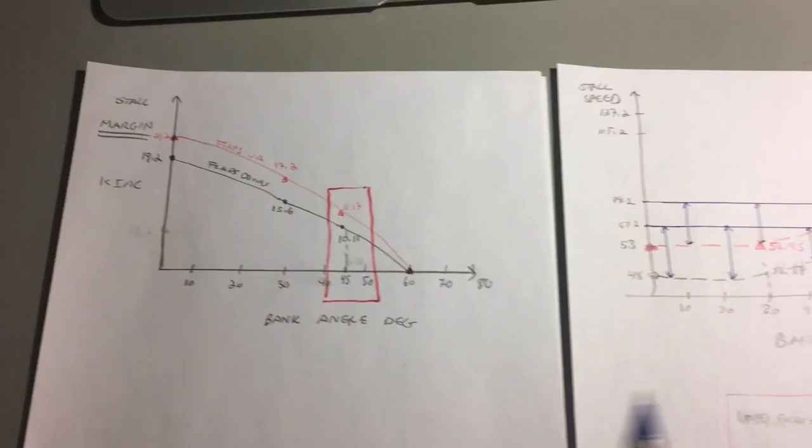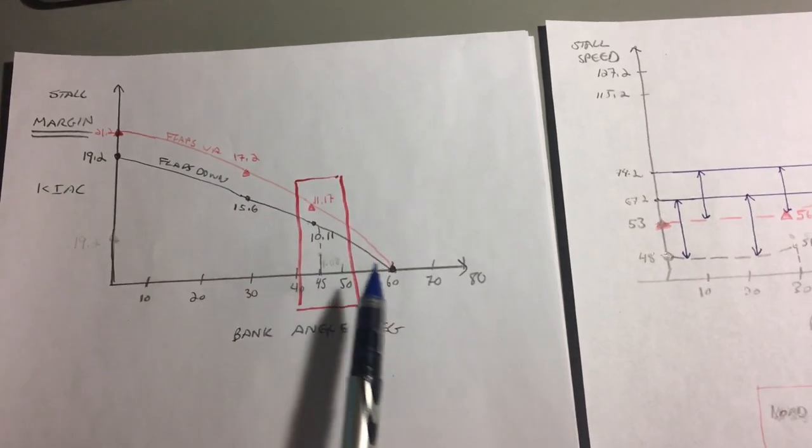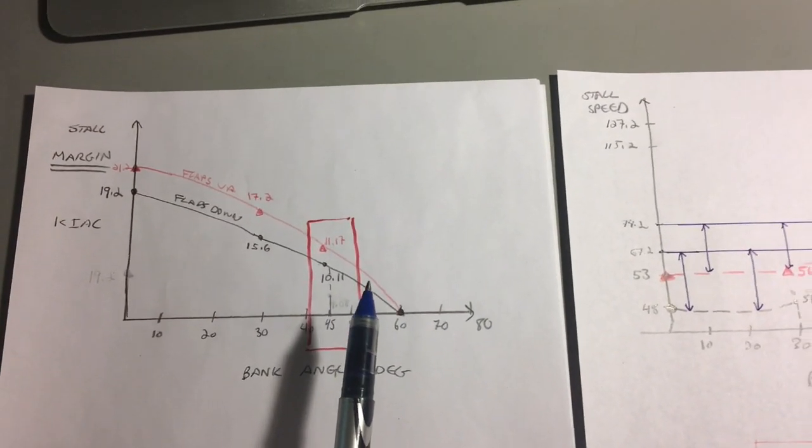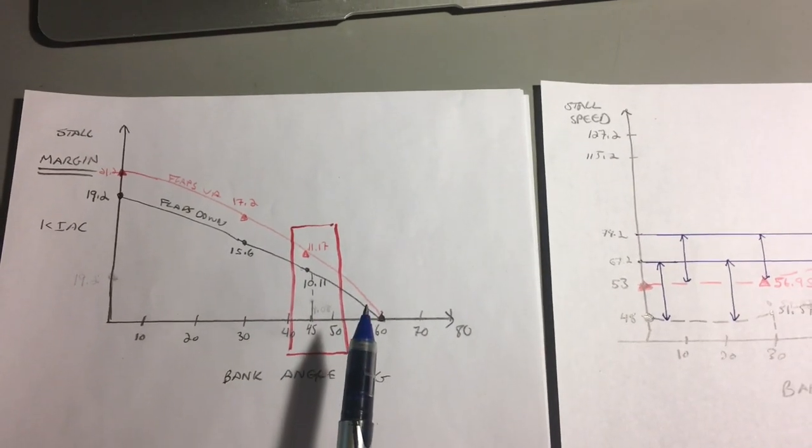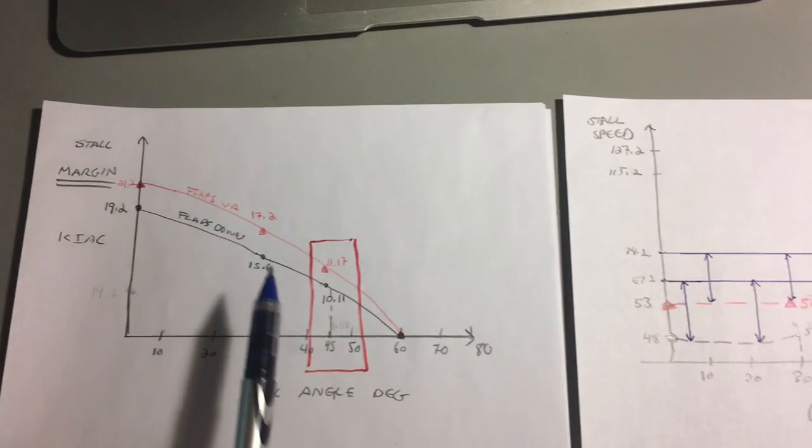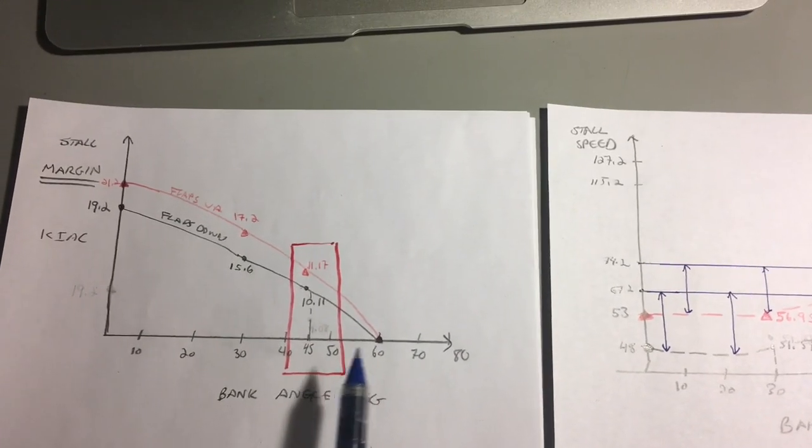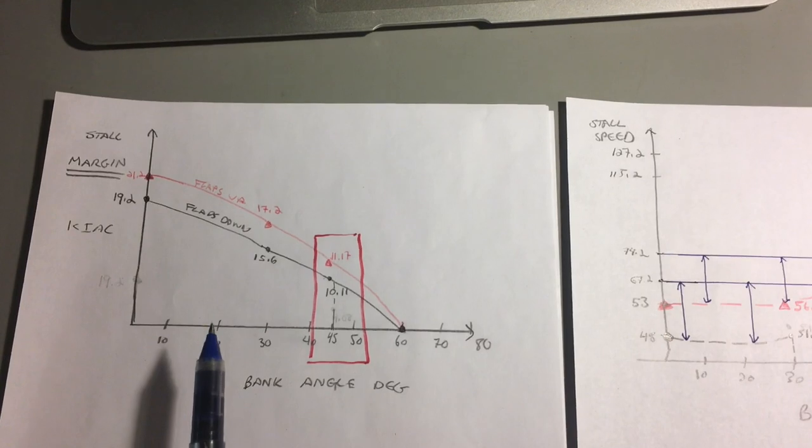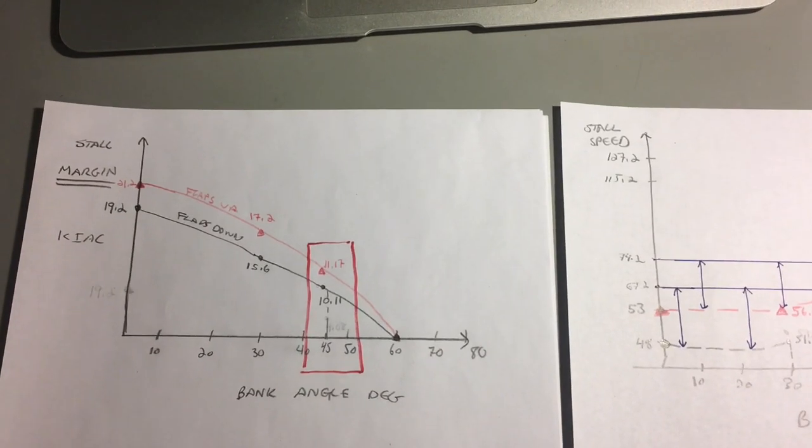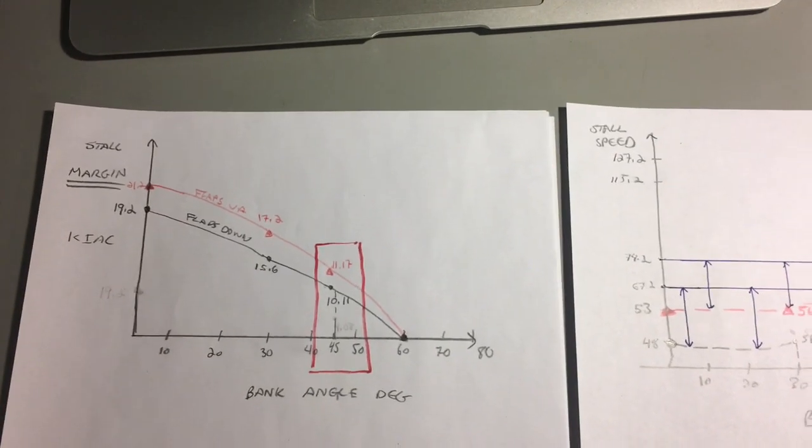The main takeaway is I hope the next time you fly you think about this curve. I hope you actually take the time to make this curve for your airplane using the numbers in your pilot operating handbook. As you're flying you'll be able to know intuitively where you are on this curve as you're banking the airplane in the pattern and flying your approach speed, and that will tell you how much margin you have before you stall the airplane. There should be no guessing games involved.